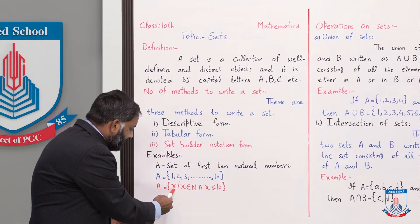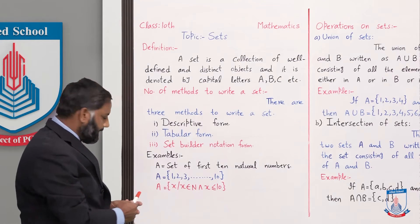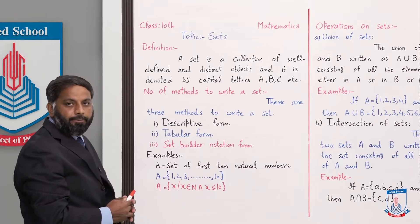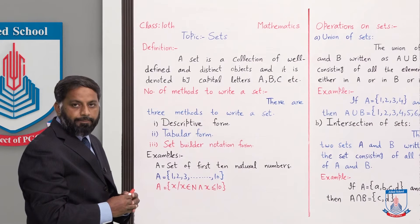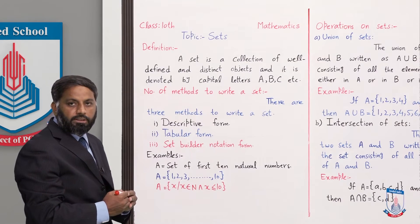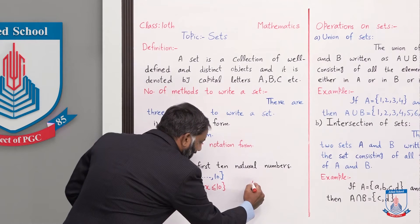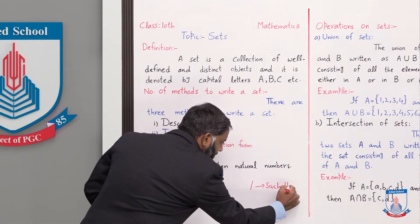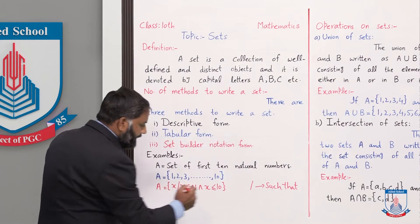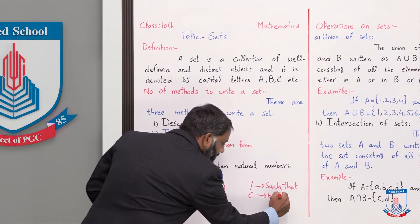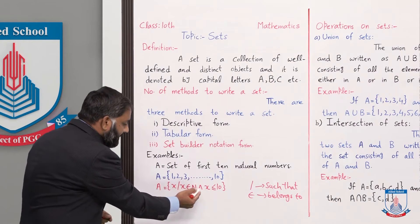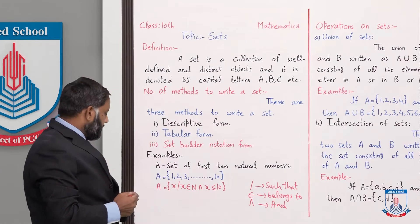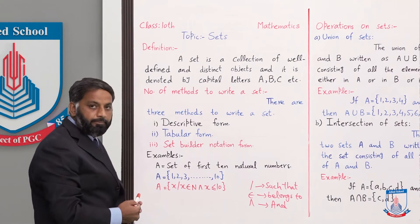Set builder notation: {x | x ∈ ℕ and x ≤ 10} — slash means 'such that', x belongs to natural numbers and x is less than or equal to ten۔ اس method میں تین symbols use ہوئے ہیں: slash means 'such that', ∈ means 'belongs to', اور last symbol means 'end'۔ {x | x ∈ N and x ≤ 10}.